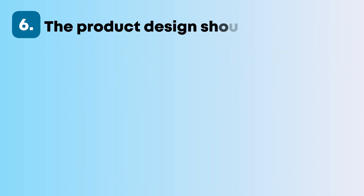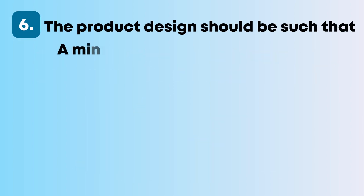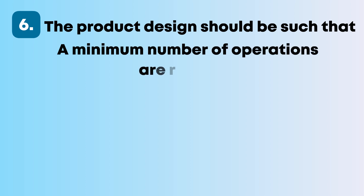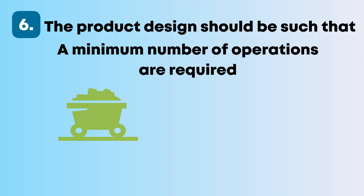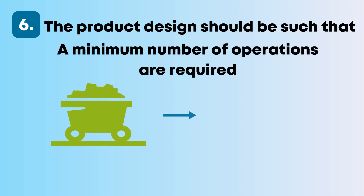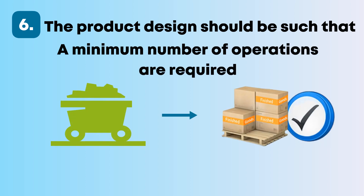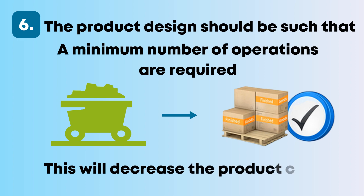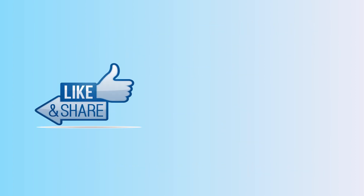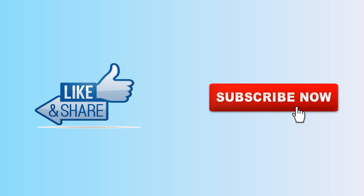Six: the product design should be such that a minimum number of operations are required to convert raw material into the finished product — this will decrease the product cost.